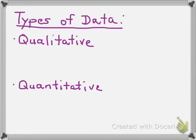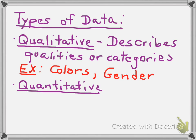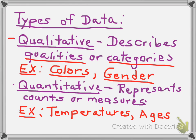The first thing we want to look at is two types of data. Your data can either be qualitative data or it can be quantitative data. Data is considered to be qualitative data if it describes qualities or categories. For example, if we are looking at colors, say, of M&Ms or gender, those would be examples of qualitative data. To be considered quantitative data, quantitative data represents counts or measures. And examples of quantitative data would be temperatures or ages.